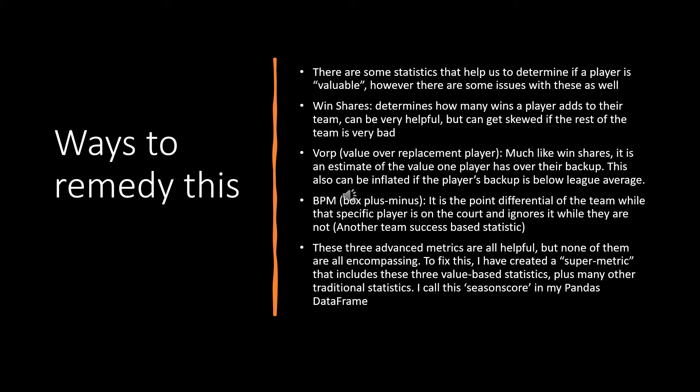Box plus minus is the point differential of the team when that specific player is on the court versus when they are not. For example, if a player plays 32 minutes out of a possible 48, and his team is up 18 in those 32 minutes, his box plus minus for that game will be 18. But this statistic is purely based on the team's success, not specifically that player. To fix this, I created a super metric that includes all three of these value-based statistics plus many other traditional statistics such as points, rebounds, assists, steals, and blocks.